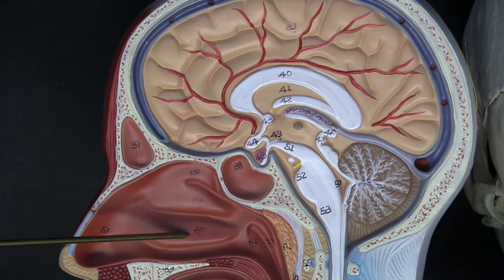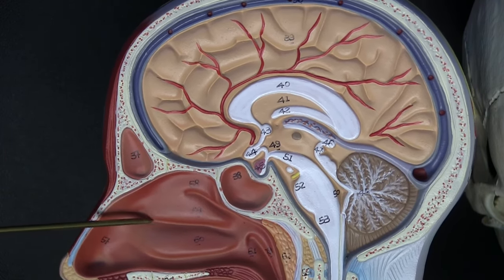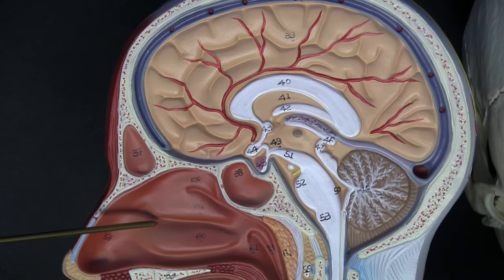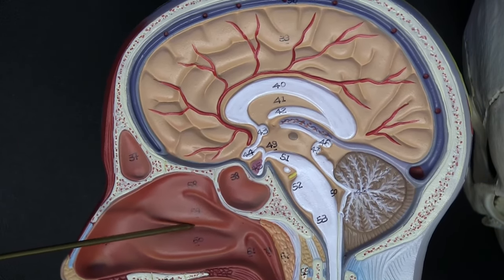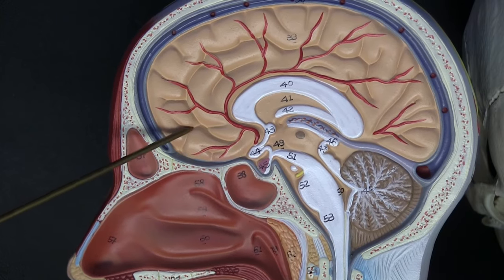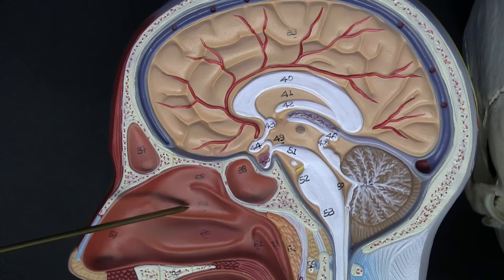Between the inferior and middle conchae we have our middle meatus, that's where our frontal sinus, our maxillary sinus, and maybe a few of our ethmoid air cells that are in the ethmoid bone will drain.